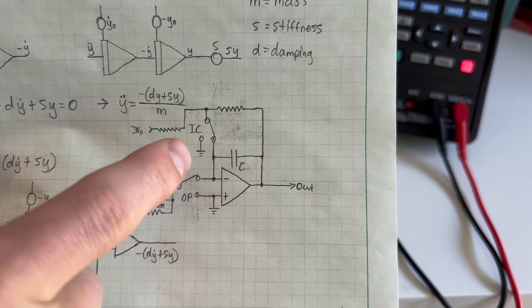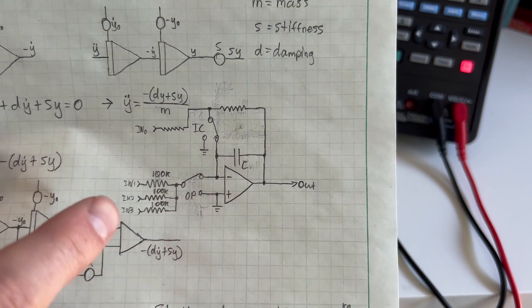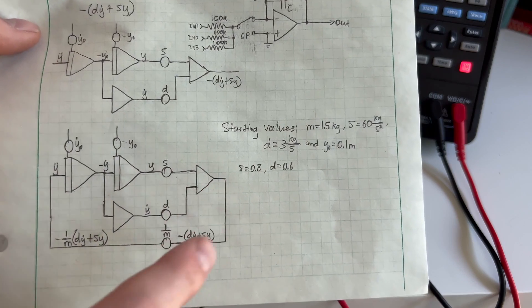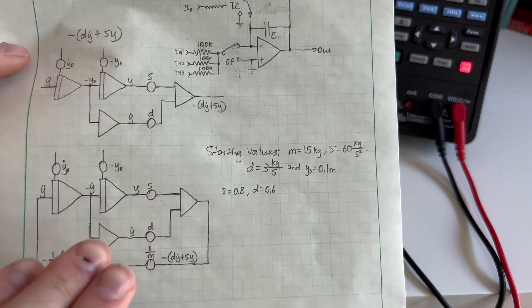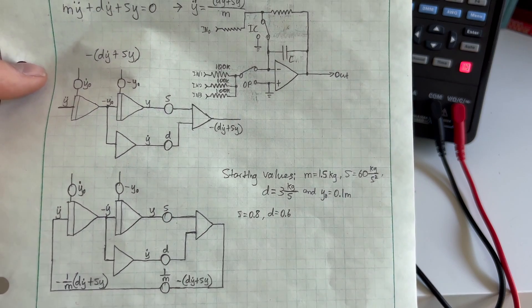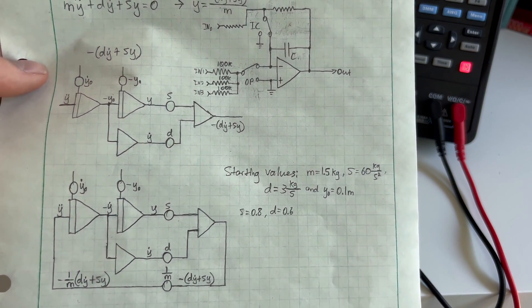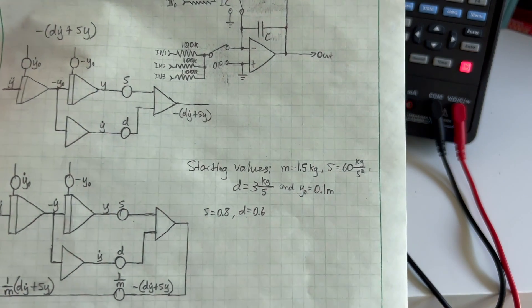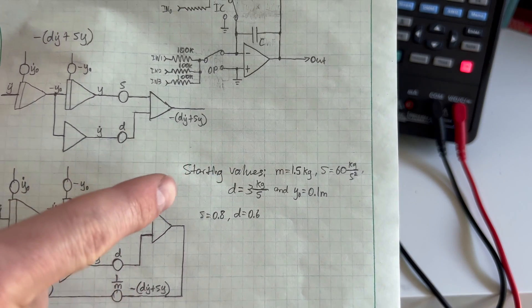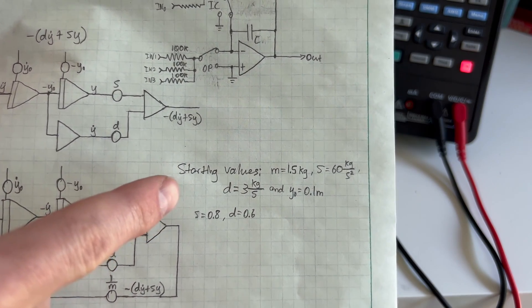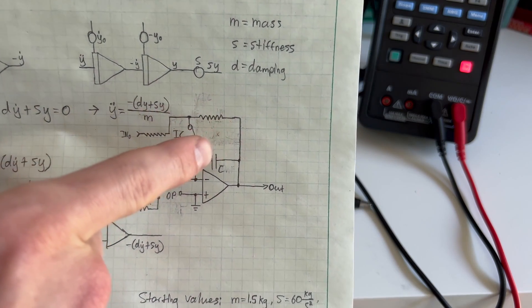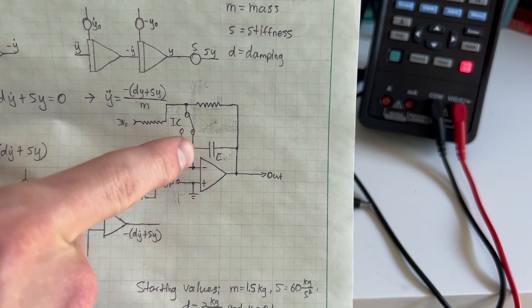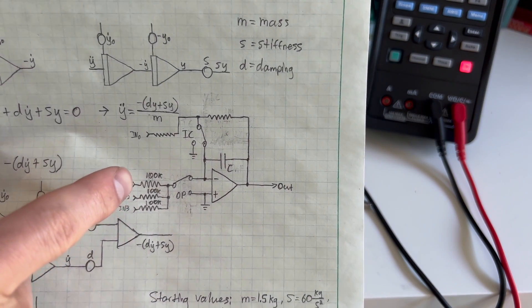And then when you want to run the equation, I have a switch here set in this feedback loop to close this loop. And it will release that mass and the damped spring system will move. And I have some starting values here that I've kind of started with and I've since tweaked it. And of course, the speed at which this solves the equation is dependent on this capacitor size and this resistance too.